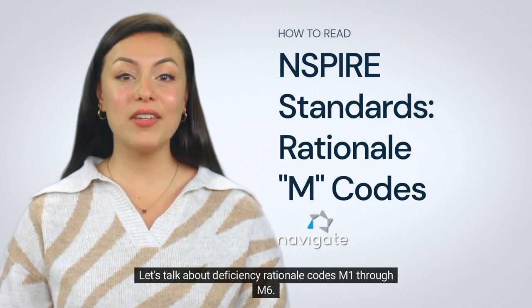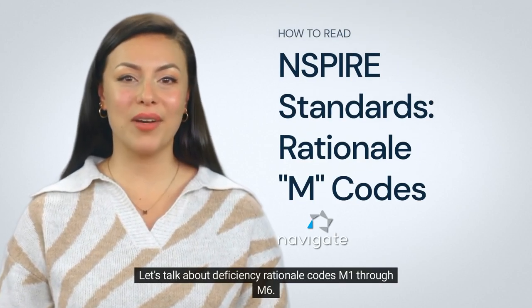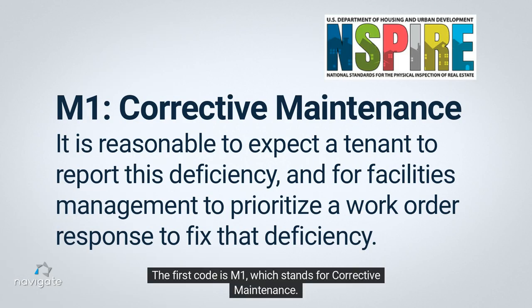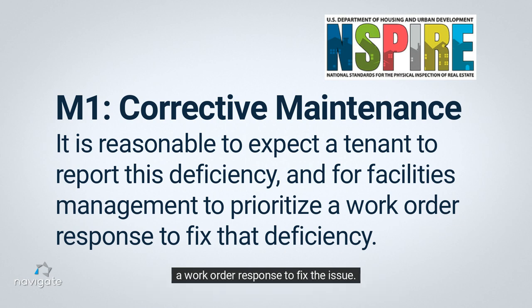Let's talk about Deficiency Rationale Codes M1 through M6. The first code is M1, which stands for Corrective Maintenance. This means it's reasonable for a tenant to report the deficiency and for facilities management to prioritize a work order response to fix the issue.